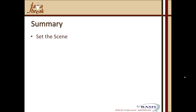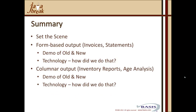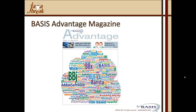In summary today, we've set the scene and spoken about outputting data as a fundamental component of any business application. We covered form-based output with invoices and statements — demoed old and new and discussed the technology. We covered columnar and tabular output, specifically the age analysis, demoed old and new, and looked at the source code showing how we assign values to the vector rather than using PRINT AT statements. We also covered what's needed to start utilizing iReport and Dockout. The BASIS Advantage magazine is out and available — hard copy, electronically via browser, or as a PDF in iBooks.